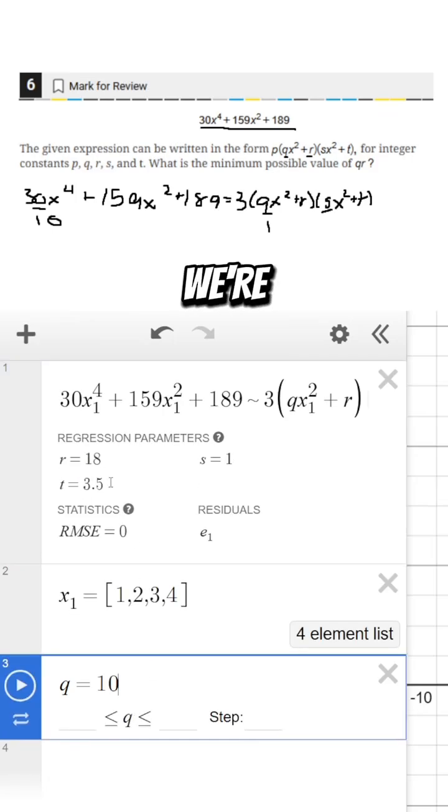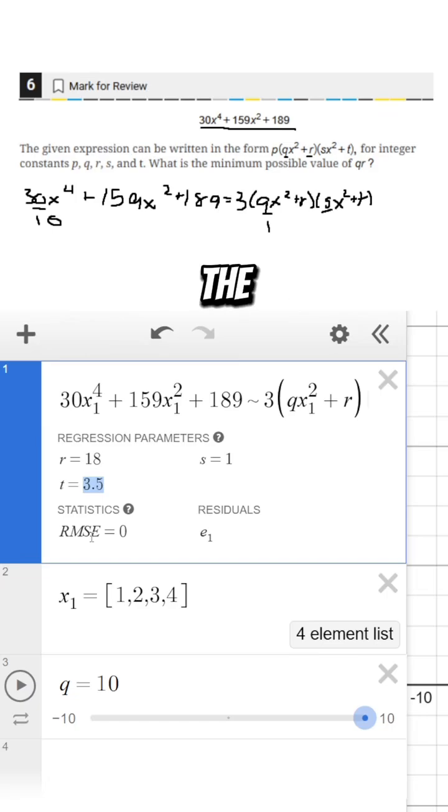Now if I try q is 10 again we're going to have something that is not an integer, so the lowest thing we got was 14 and therefore our answer is 14.